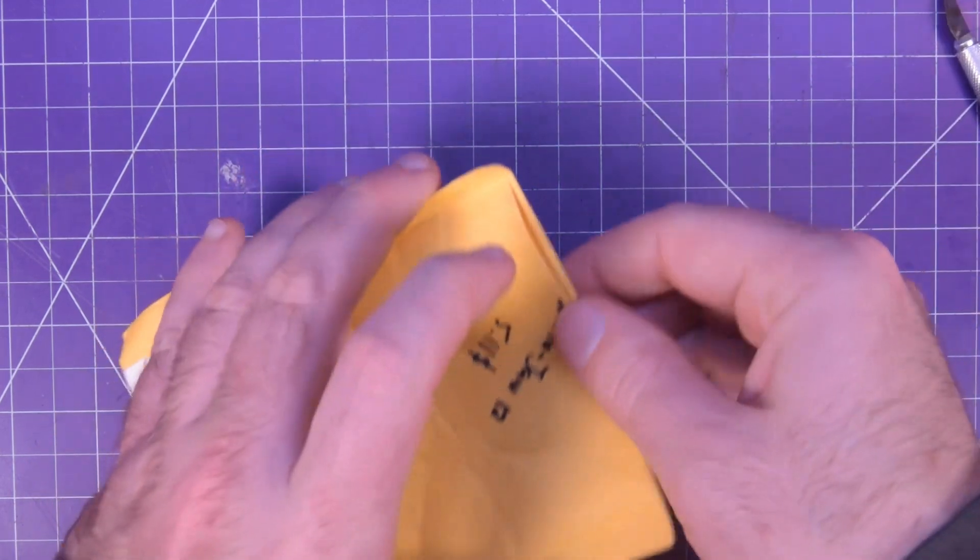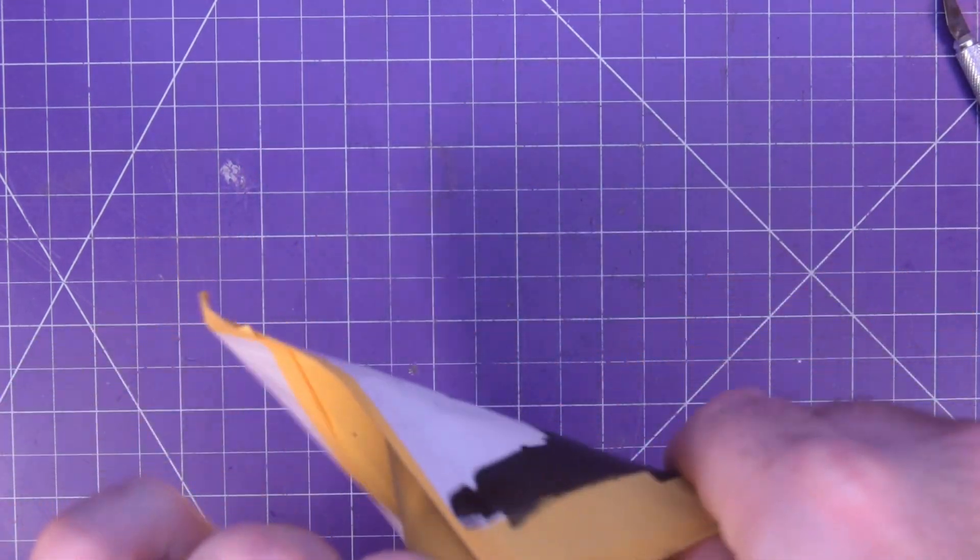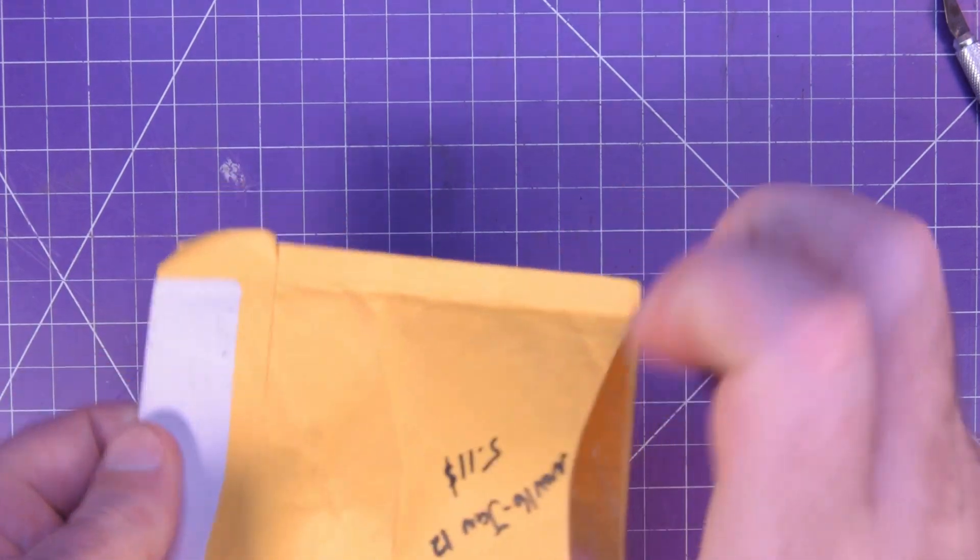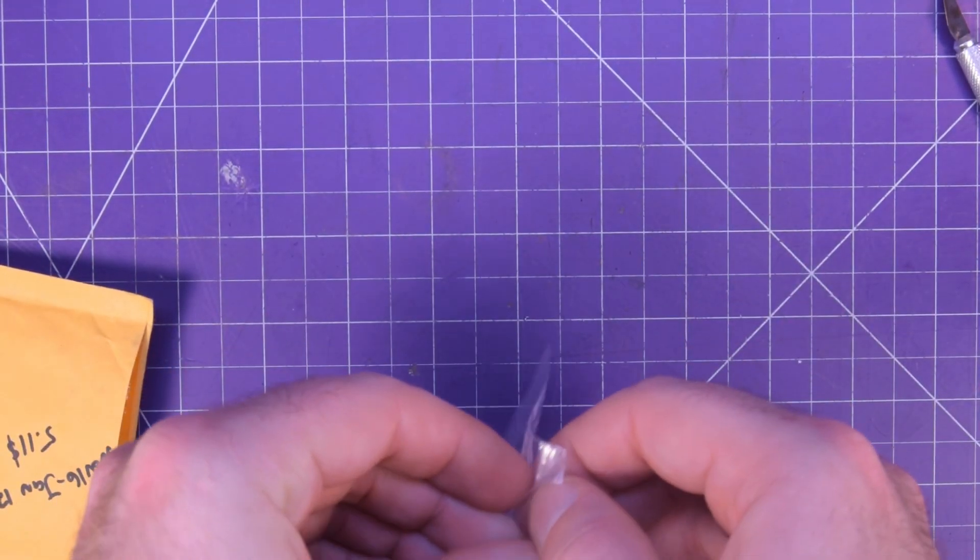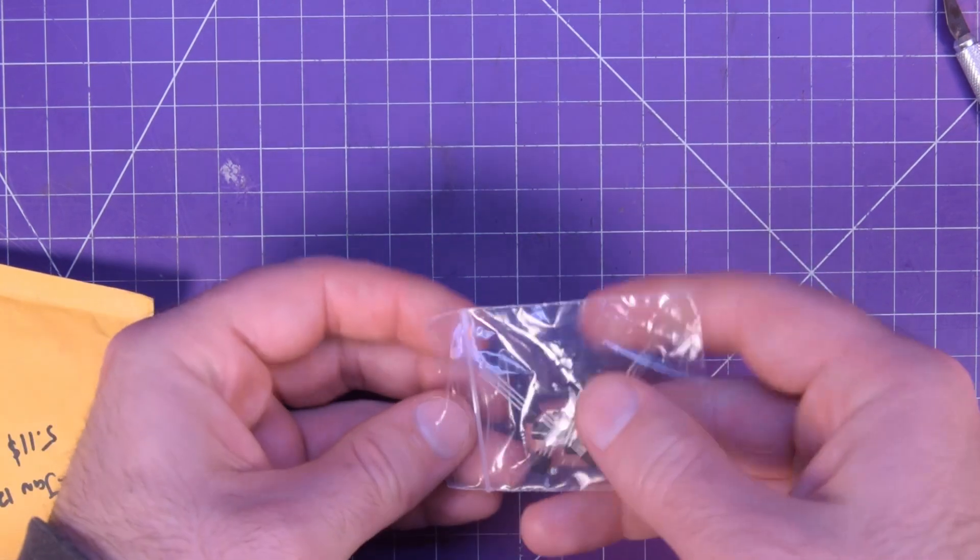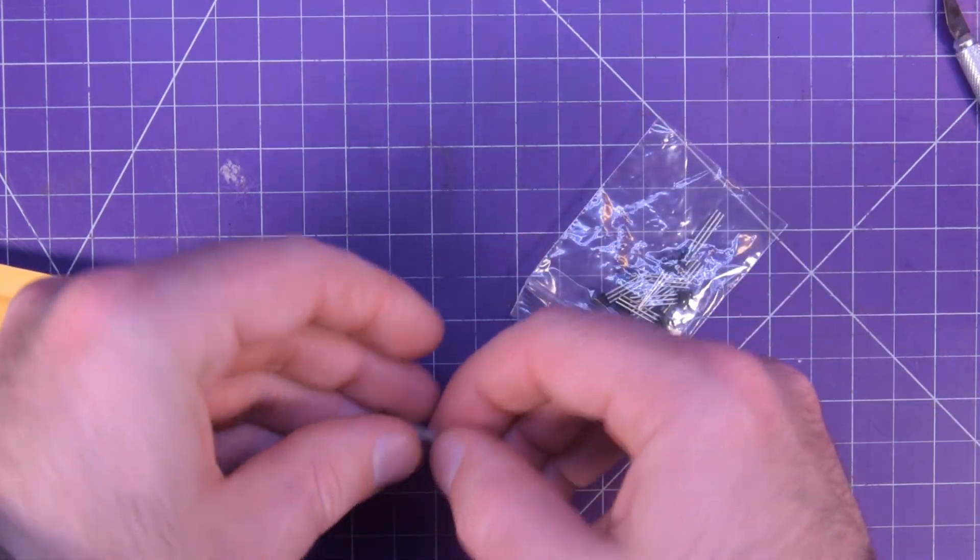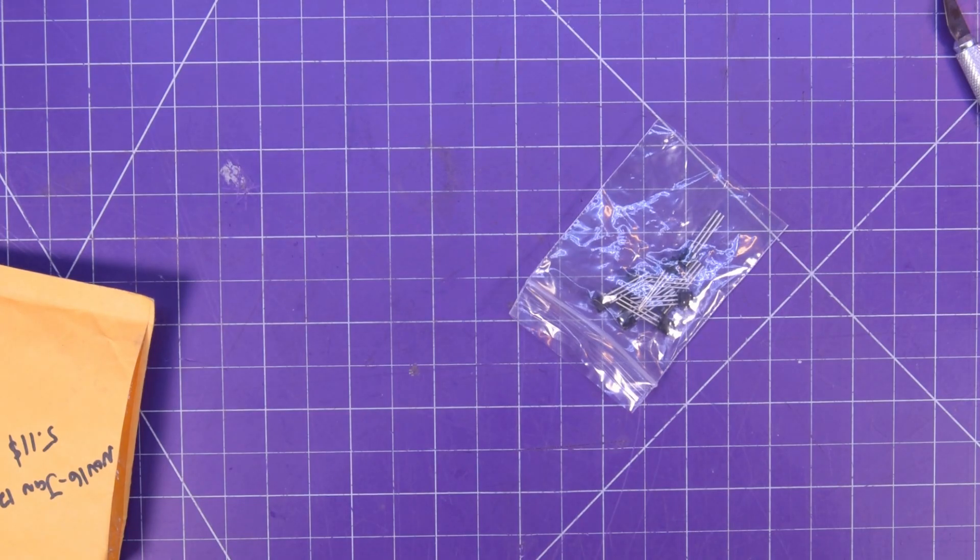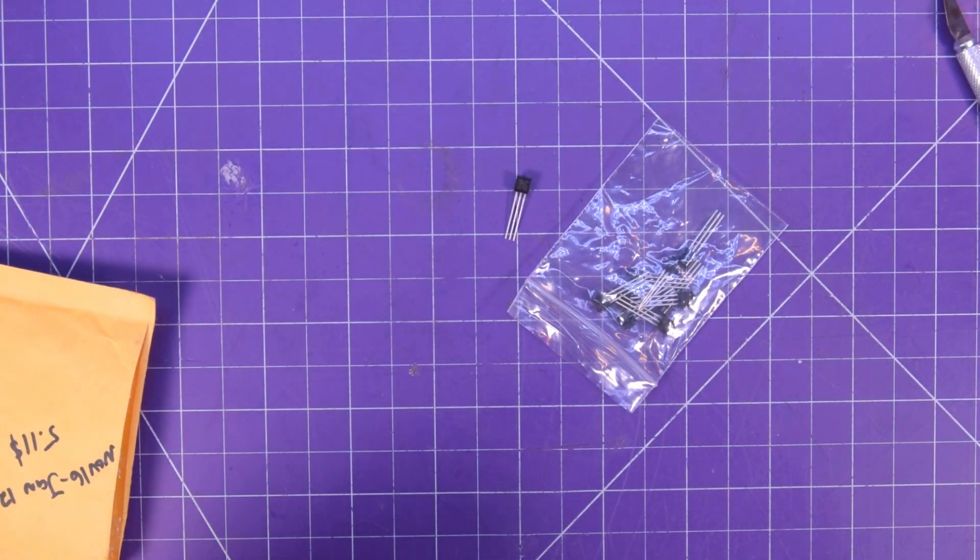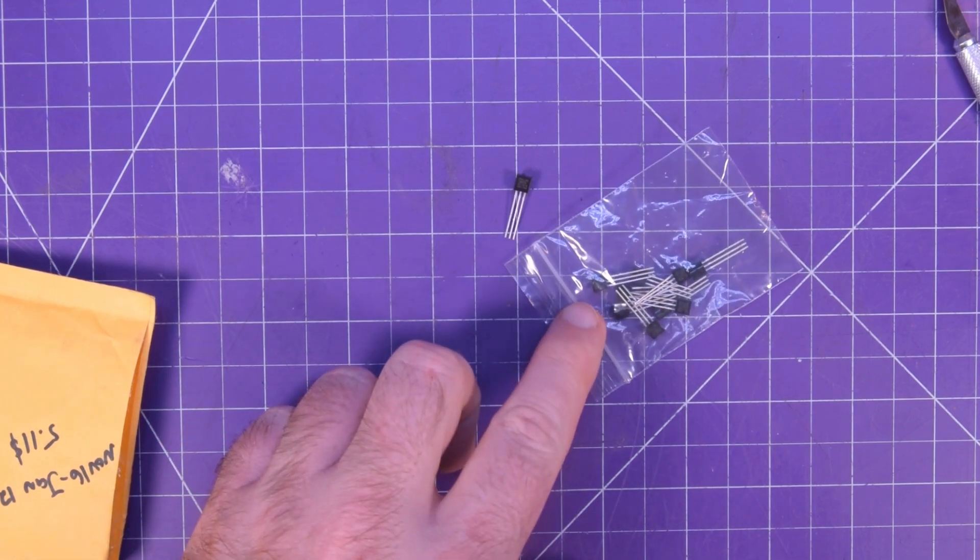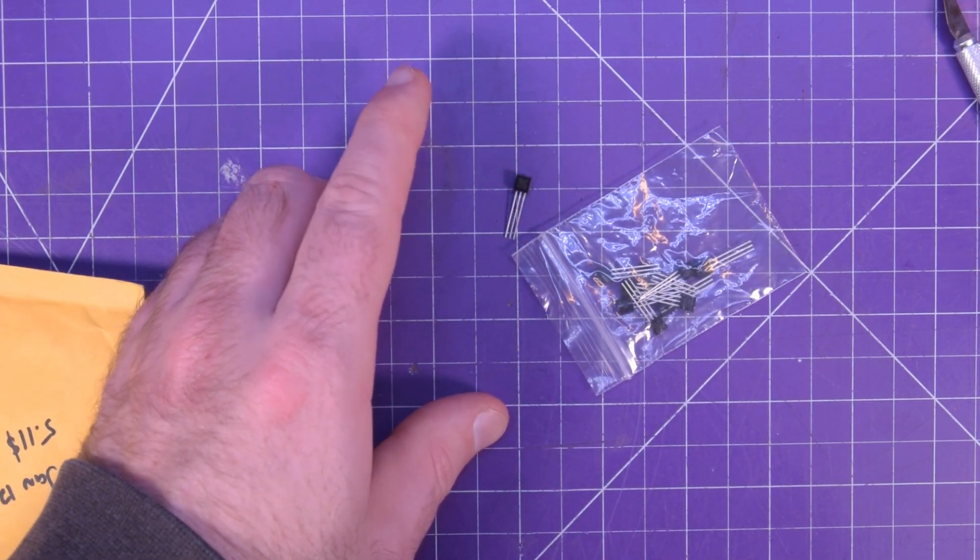Oh, it's not at all what I thought. It's these TO92 packages, I think. Let me see if I can get the number off this. It says Dallas 18B20. I believe that is a temperature sensor. Give me a moment.